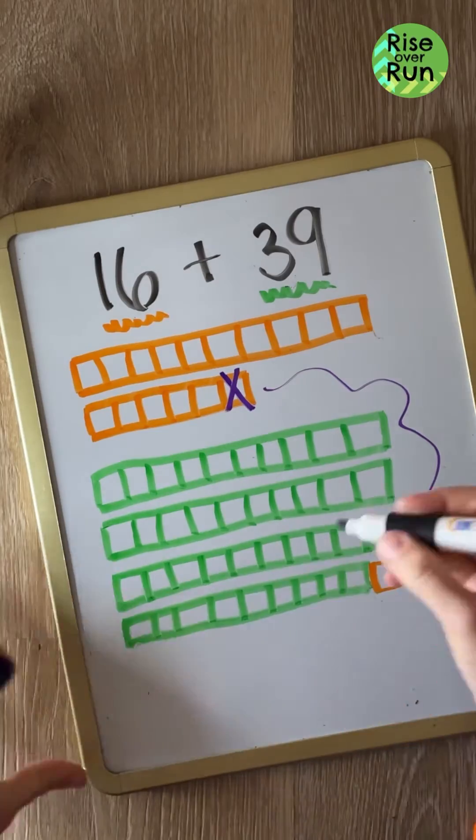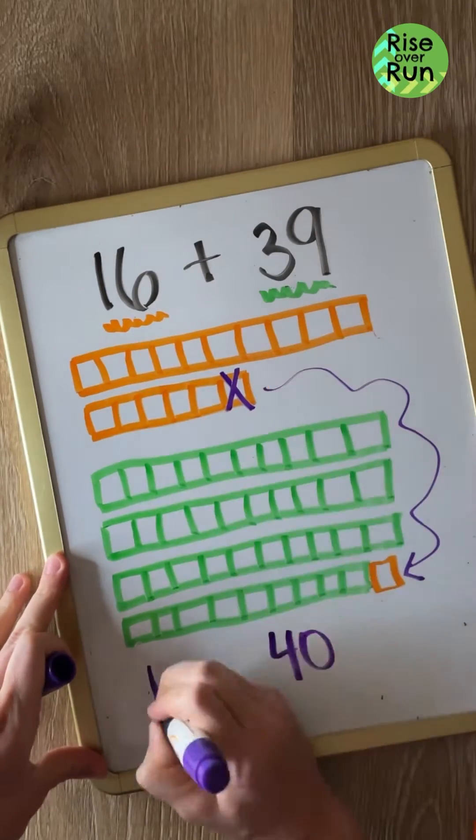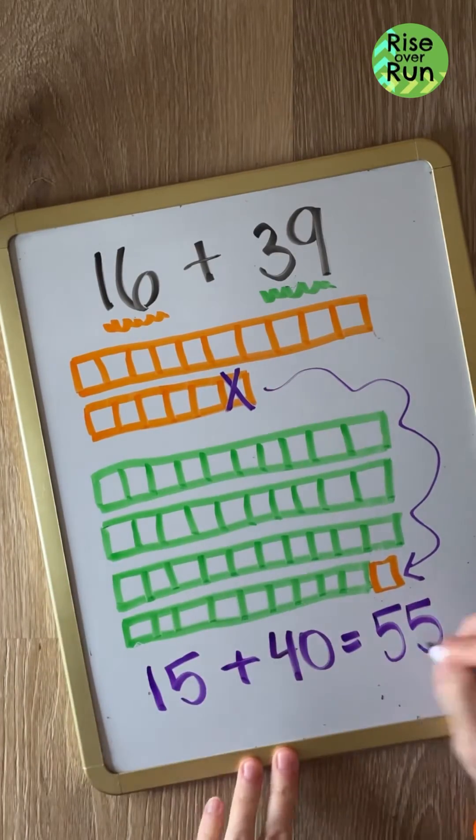So here I'll borrow a 1 to make 39 into 40. 40 plus 15 gives me 55.